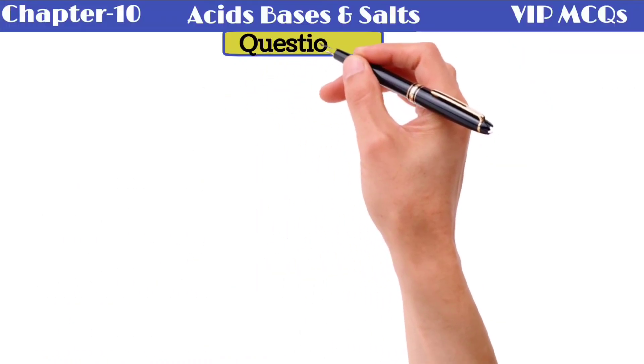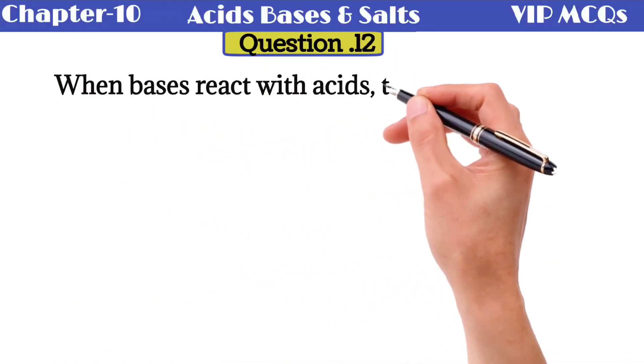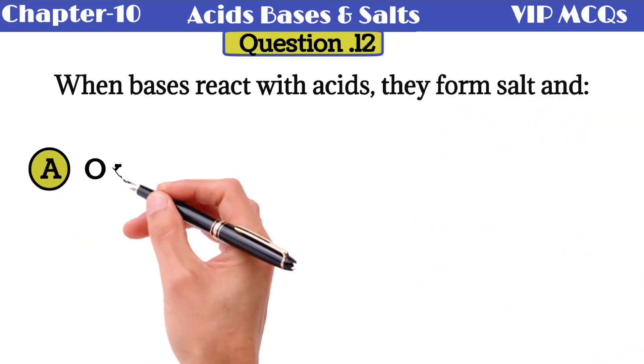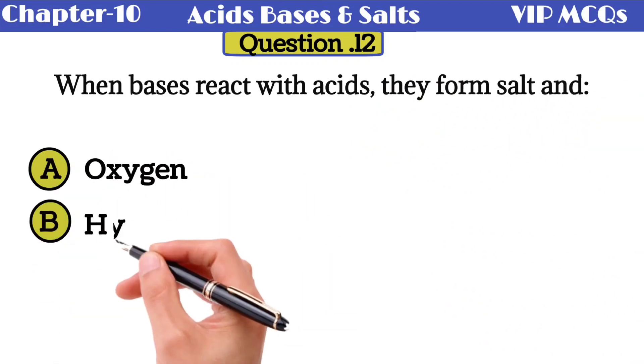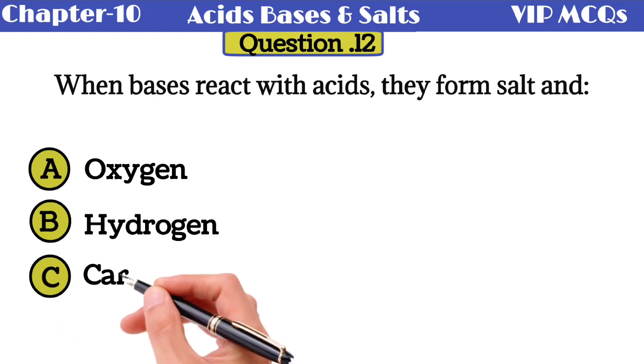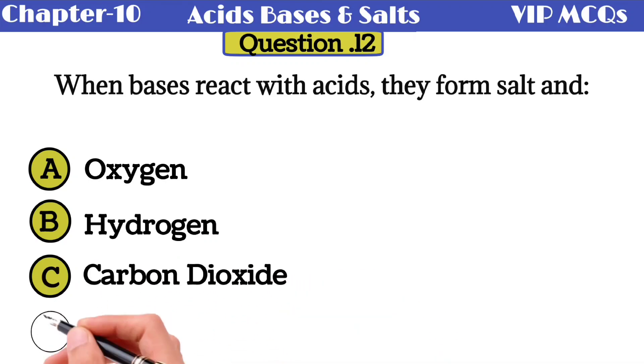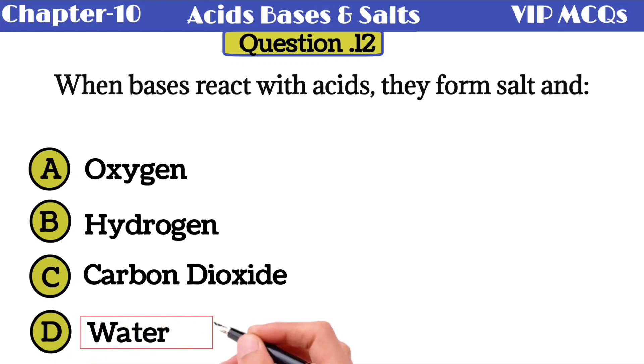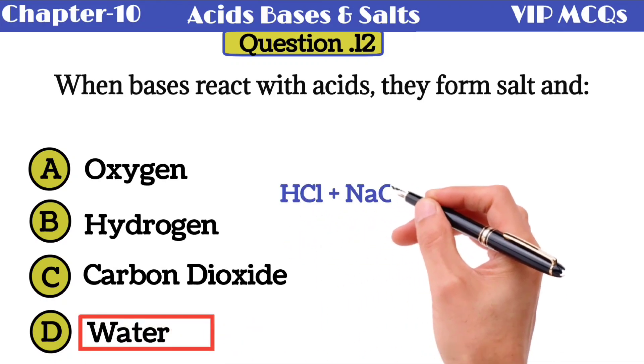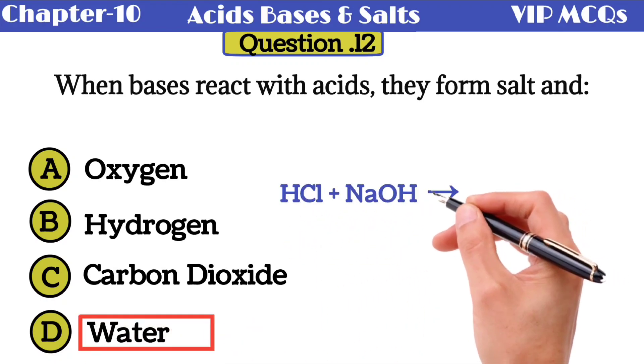Question number 12: when bases react with acids, they form salt and - option A oxygen, option B hydrogen, option C carbon dioxide, and option D water. The correct option is water. For example, when HCl reacts with NaOH, they produce two products that are salt and water.